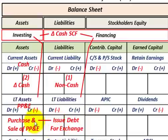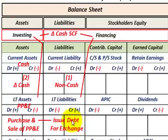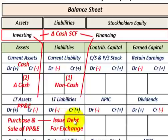The seller is going to give us a piece of equipment, and what we're going to do is issue or give that seller a bonds payable — it could be a notes payable as well — in exchange for the equipment. So they give us the equipment, and we give them an IOU for the purchase of the equipment.